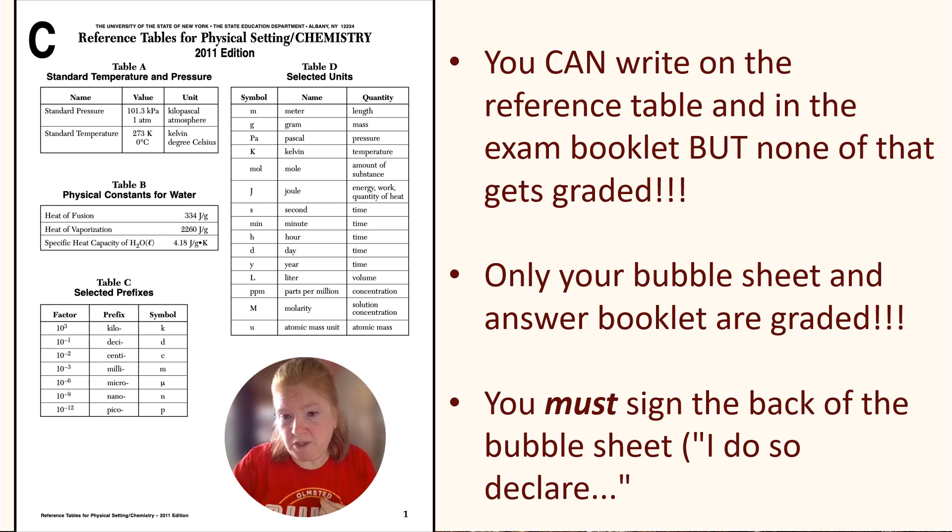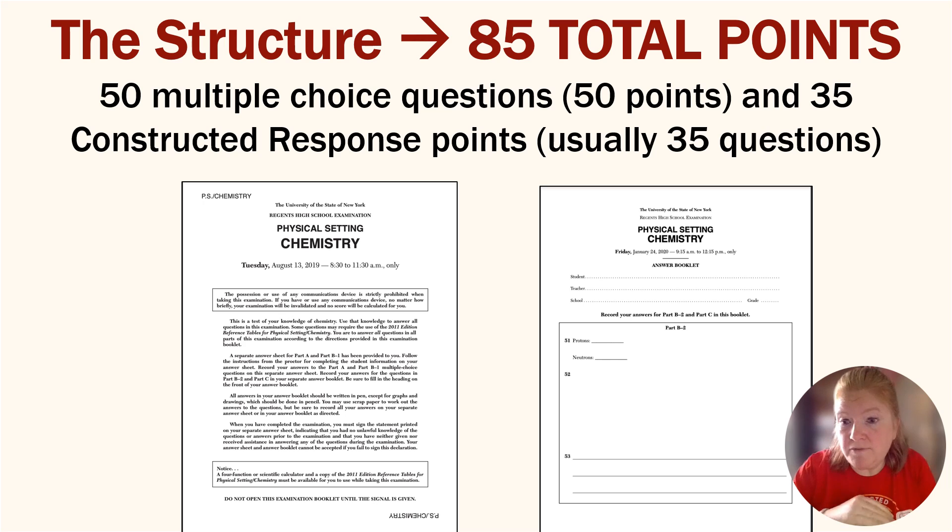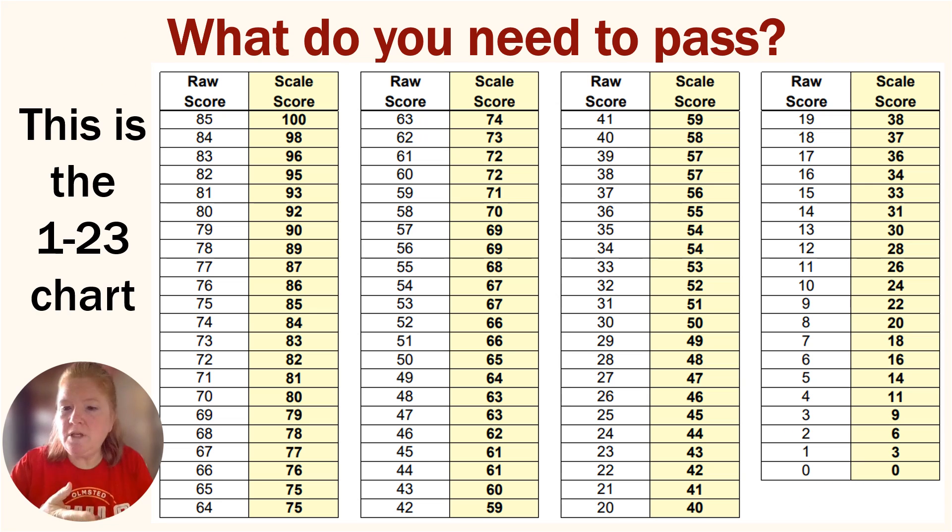On the back of the bubble sheet, at the bottom of the bubble sheet, there's a sign that says 'I do so declare' - you have to sign that before turning in your exam. The structure is going to be 85 total points. That's typically 85 questions - 50 multiple choice and 35 constructed response questions. Here's just a general outline from the January 2023 exam. You can see that in order to get a 65, you needed 50 points, but you can see there's a lot of doubling up before and after that passing grade.